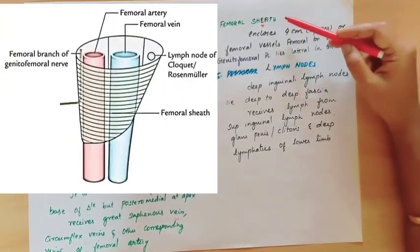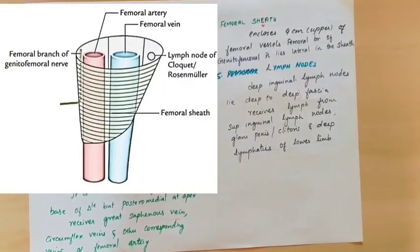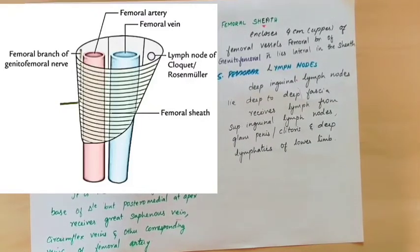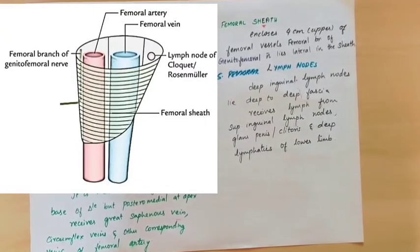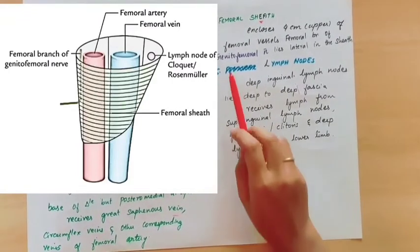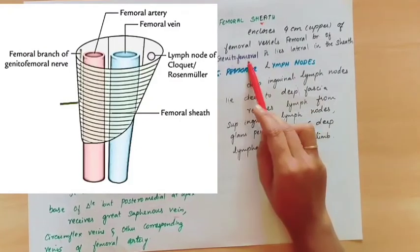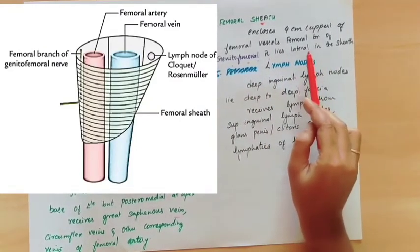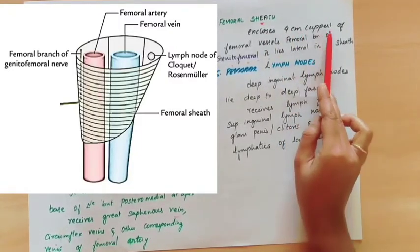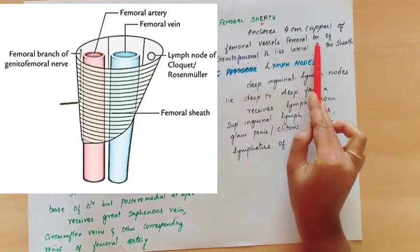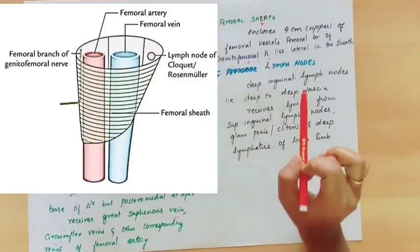Next comes the femoral sheath. The femoral sheath encloses the femoral artery, femoral vein, and lymphatics. It encloses the upper 4 cm of the femoral vessels. The femoral branch of the genitofemoral nerve is present lateral to the femoral artery but outside the femoral sheath.